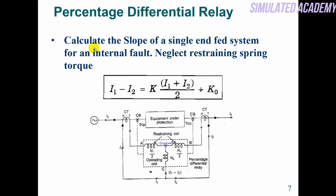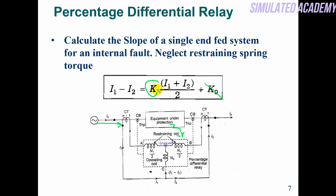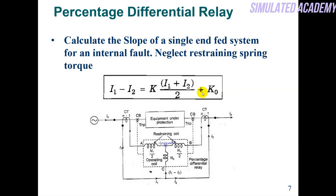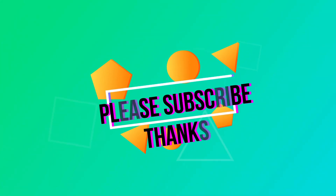Here is a simple example: calculate the slope of a single-end-fed system for an internal fault, neglecting the restraining spring. In this case we also neglect k0. Current is flowing in a single-end-fed system and an internal fault occurs — no current is passing from the other side, so I2 equals zero. When you put I2 = 0 into the formula, the value of K comes out to be 2. You can solve this and let me know in the comment section whether it is correct or not. This was a simple tutorial on how we modify the differential relay into the percentage differential relay.